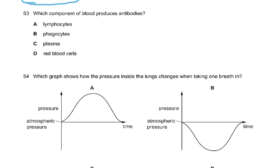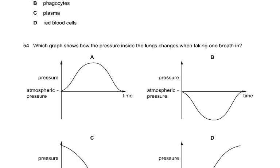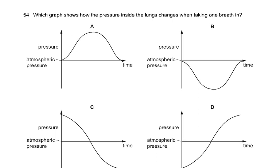Which component of blood produces antibodies? Phagocytes perform phagocytosis; plasma carries glucose and amino acids; red blood cells carry oxygen. The answer is A — lymphocytes produce antibodies. Please do not confuse antibodies with antibiotics, which are something entirely different.